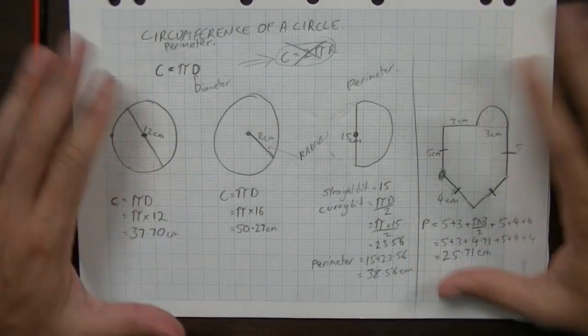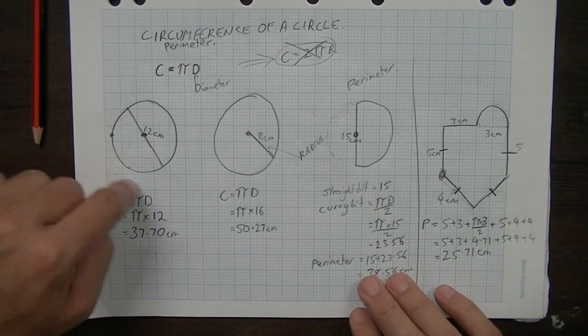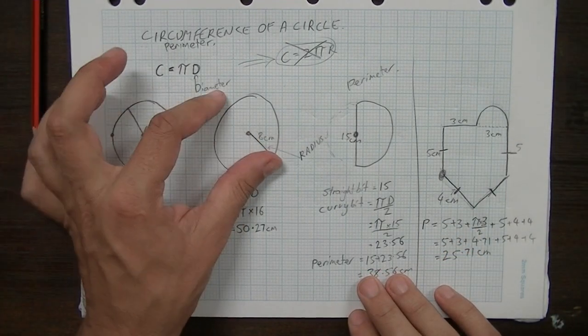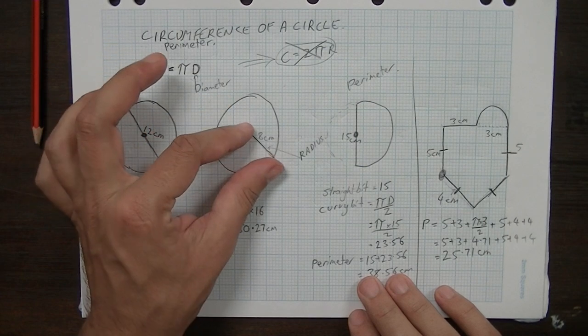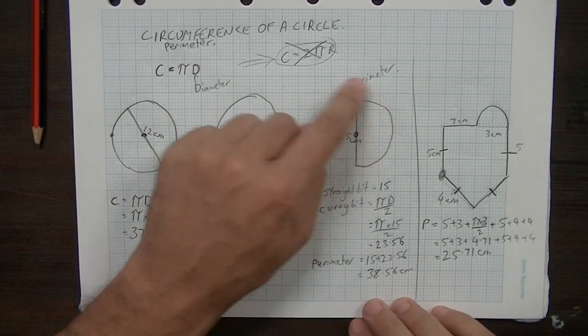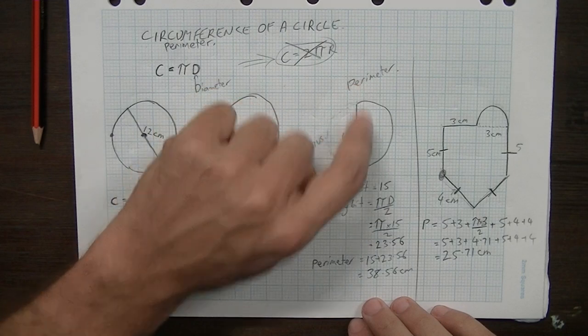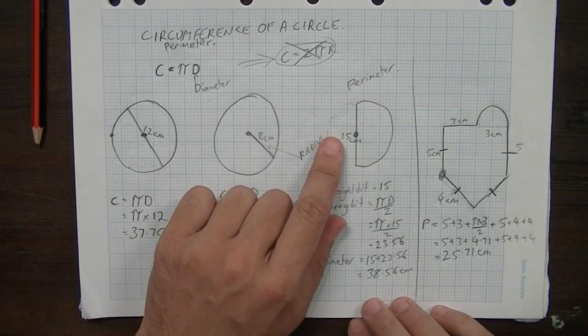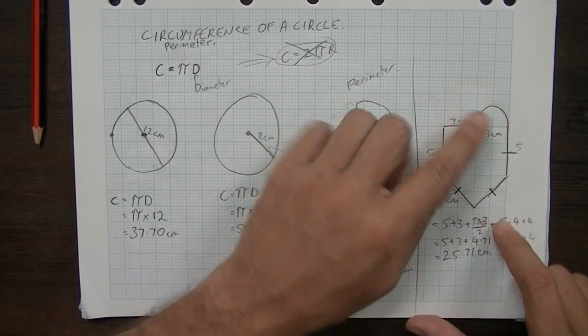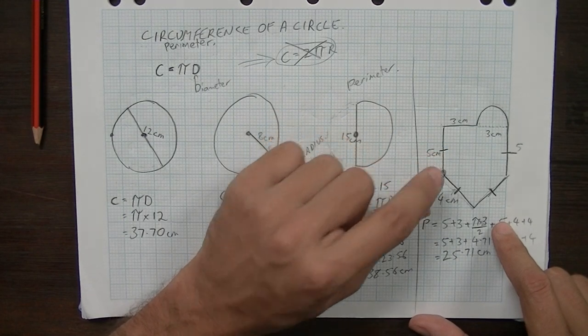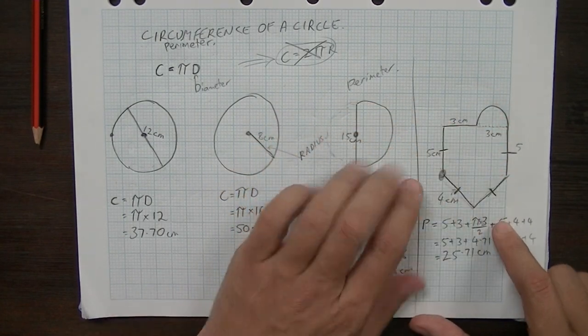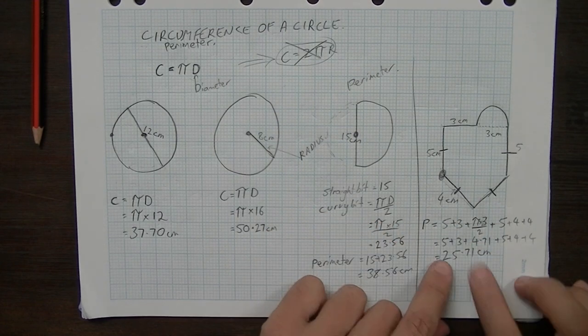Okay, a lot covered in this video. We've looked, first of all, at a circle with a diameter, a circle with a radius where we had to multiply that by 2 to find the diameter. A semi-circle where we had to find the curvy bit and the straight bit and add them together. And then, finally, a really difficult composite shape where we needed to be really careful and go all the way around that shape to find the eventual perimeter.